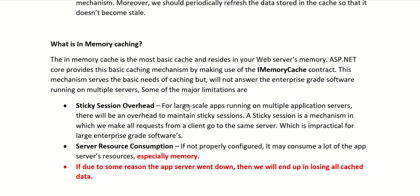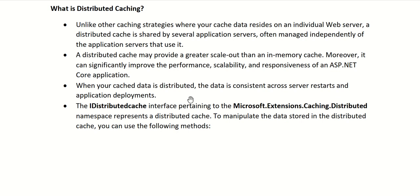What is distributed caching? Unlike other caching strategies where cache data resides on an individual web server, a distributed cache is shared by several application servers and is often managed independently of the application servers that use it — it is a separate server itself. A distributed cache may provide greater scale-out than an in-memory cache and can significantly improve performance, scalability, and responsiveness. Since the cache is on a separate machine, there is no threat of losing data even if your web server restarts.